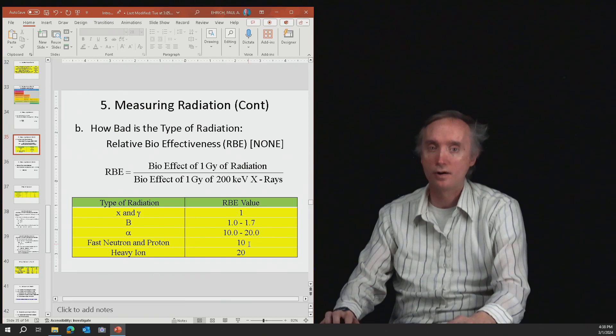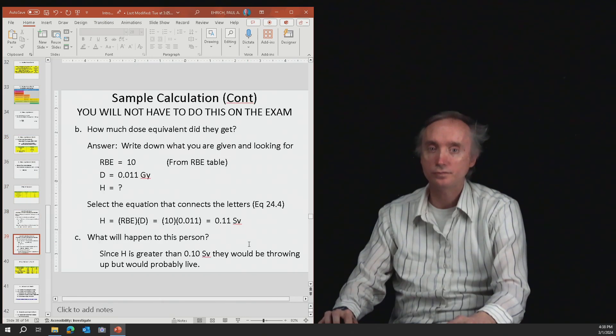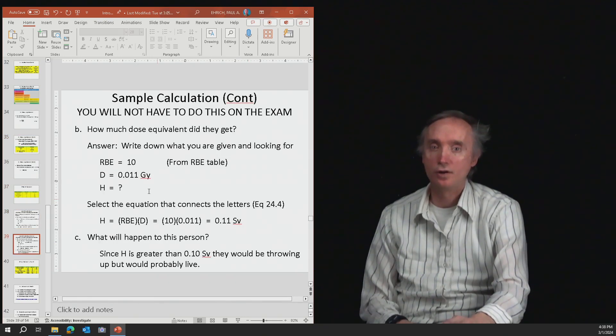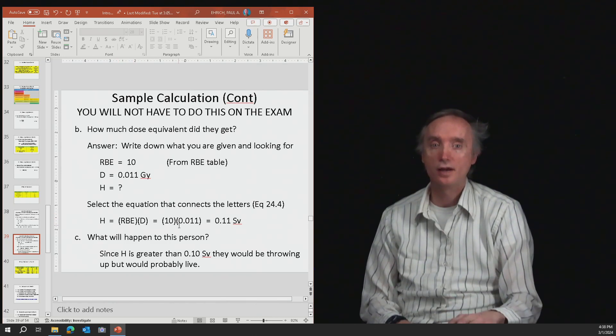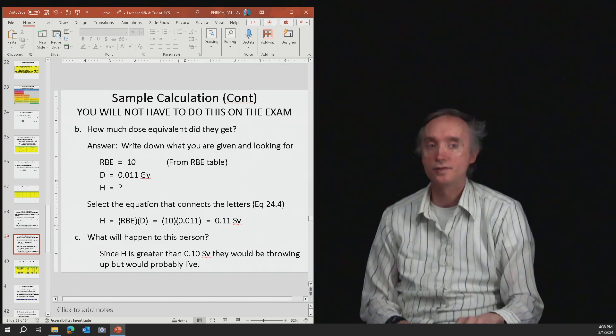So that's going to be our RBE. Okay? So we know the RBE is 10. We know the D is 0.011 from the previous problem. We need to find the H. So the H is multiply the two together, and you get 0.11 sieverts.